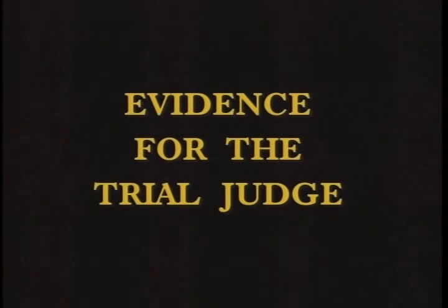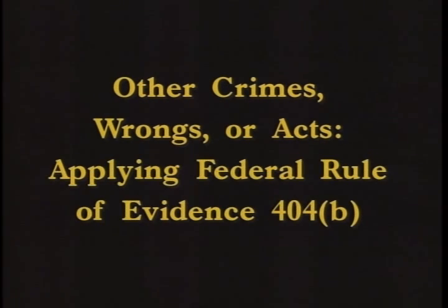Evidence for the Trial Judge: Other Crimes, Wrongs, or Acts — Applying Federal Rule of Evidence 404(b), Part 2. Welcome to Evidence for the Trial Judge, a Federal Judicial Center program for United States District and Magistrate Judges. I'm Stephen Salzberg, Howrey Chair of Trial Advocacy at the George Washington University Law School, and this is the second part of our program on Federal Rule of Evidence 404(b).